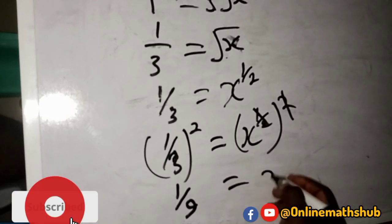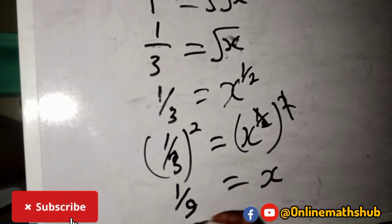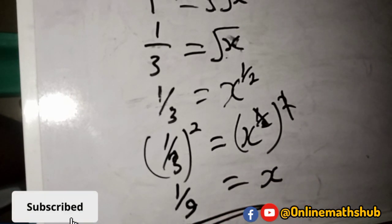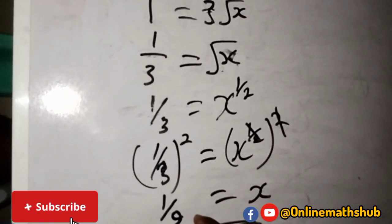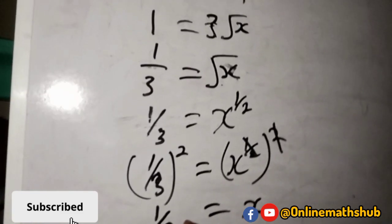which is equal to x. This is our final answer: x is equal to 1 over 9. We can run a quick check to see whether our answer is correct.